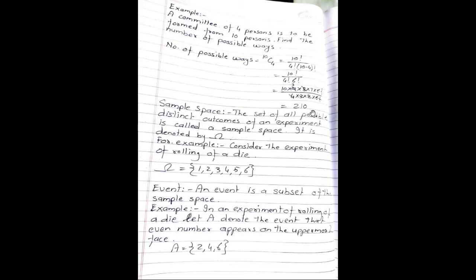Next concept: sample space. The set of all possible distinct outcomes of an experiment is called a sample space. It is denoted by omega. For example, consider the experiment of rolling a die. The sample space omega is given by {1, 2, 3, 4, 5, 6}.